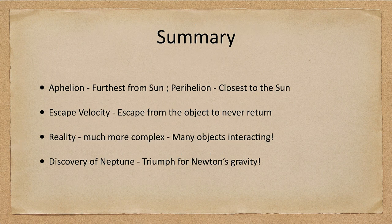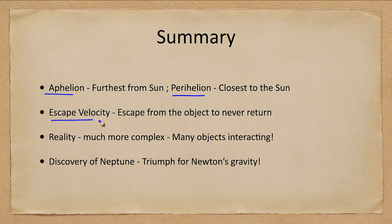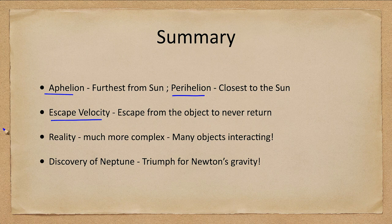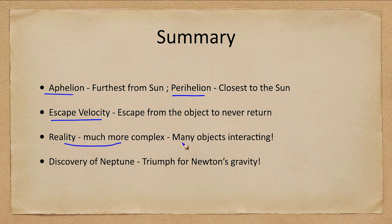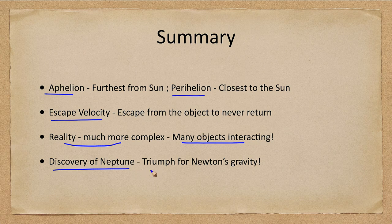So let's go ahead and finish up as we do with our summary. We talked about aphelion and perihelion, which were the furthest and closest distances to the sun of an object orbiting the sun. We looked at escape velocity, which is you escape from the object never to return; you're going fast enough that the object can never slow you down. In reality, everything is much more complex; you have lots of objects interacting together. And finally, we looked at the discovery of Neptune predicted to exist because of deviations in the orbit of Uranus. And it was a great triumph for Newton's gravity.